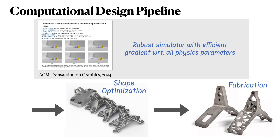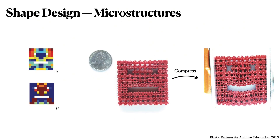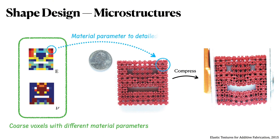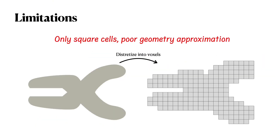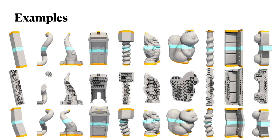We propose a robust differentiable simulator and apply it to help design microstructures that can be easily fabricated. One way of shape design is using microstructures. Previous works discretize the object into a coarse voxel grid and perform simulations on it, then fill voxels with detailed microstructures after optimization. However, this method is limited to square cells, which has poor geometry approximation. Therefore, we propose a special family of cells that can preserve the geometry surface, as shown on a variety of models with even coarse grids.